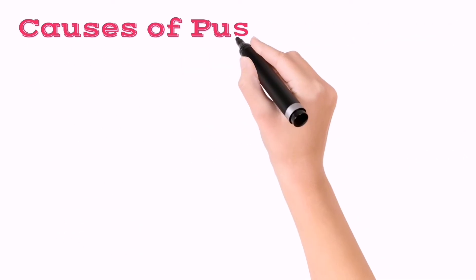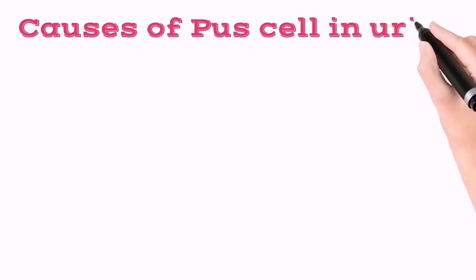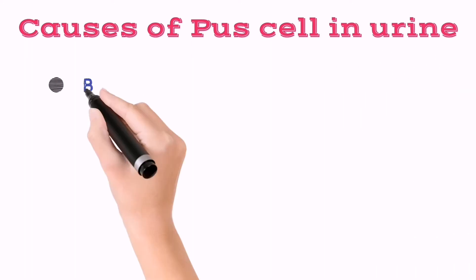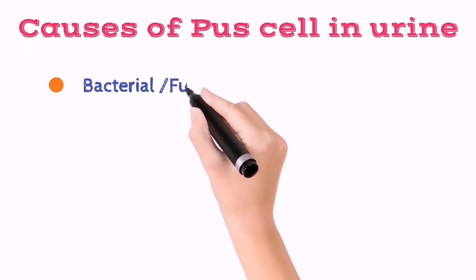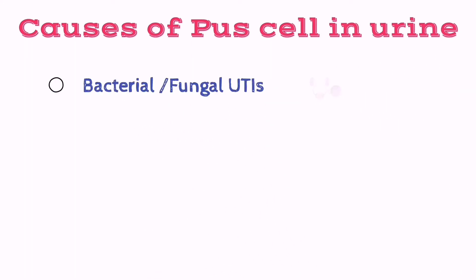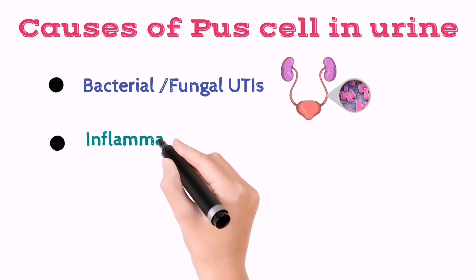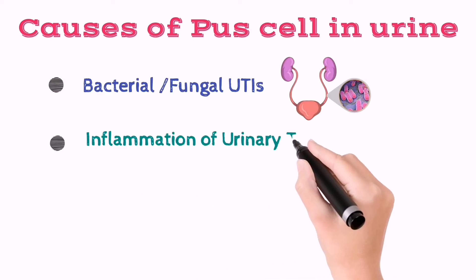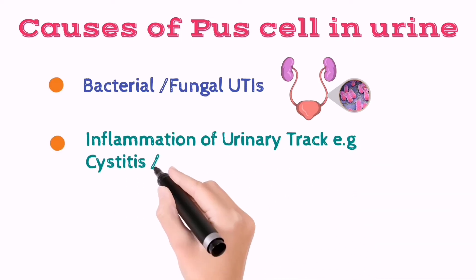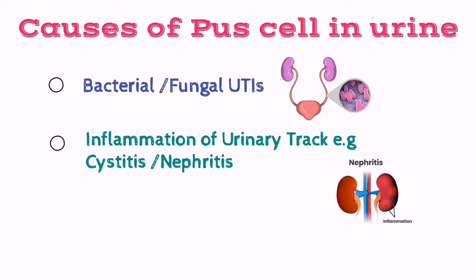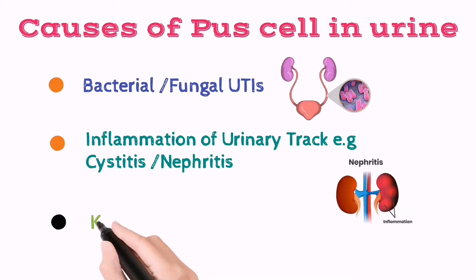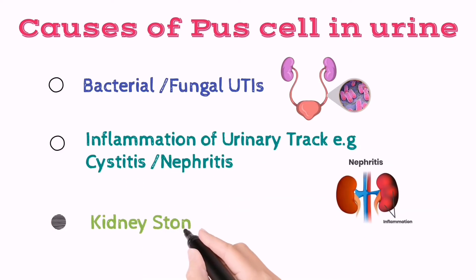The major causes of pus cells in urine include bacterial or fungal UTIs, inflammation of the urinary tract, e.g. cystitis or nephritis, and kidney stones.